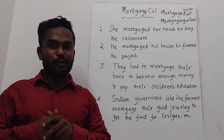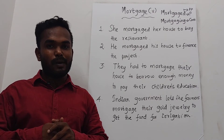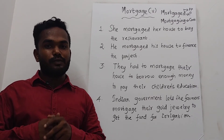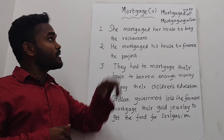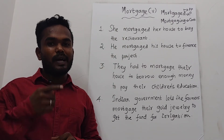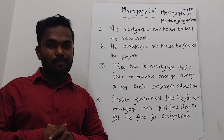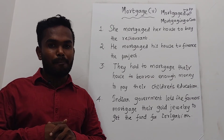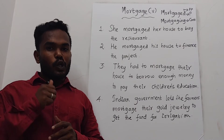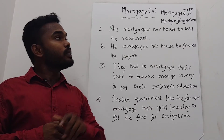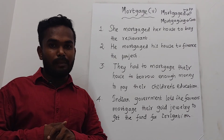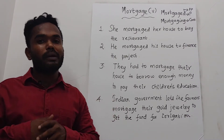As we know, verbs can have five forms: the base form, past form, the participle forms, and the future form. The base form of this verb is 'mortgage', the past form is 'mortgaged', the past participle form is also 'mortgaged', the continuous form is 'mortgaging', and the future form uses modal auxiliary verbs followed by the base form — that is, 'will mortgage' or 'shall mortgage'.